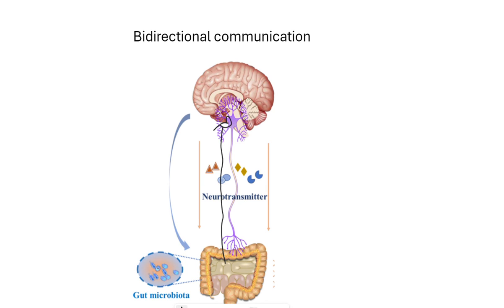Looking at the brain-to-gut direction: the brain is where we process stress. If we're under chronic stress, that will trigger a release of high levels of cortisol. High levels of cortisol will then impact the composition of our gut bacteria efferently, disrupting activity occurring in our gut.